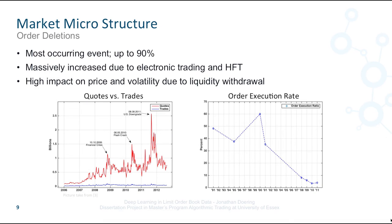As already mentioned, order cancellation is the most occurring event in modern electronic markets with a ratio of up to 90% of all events. The two figures below illustrate this development over the last years. The left figure shows all incoming quotes with executed trades between 2006 and 2012 in US markets. It can easily be seen that there are much more incoming quotes than actual trades. That includes that almost all non-executed quotes have to be deleted or expired at some point.